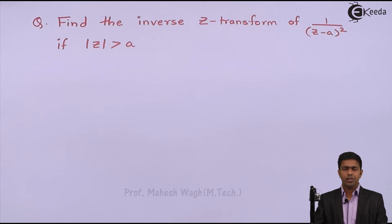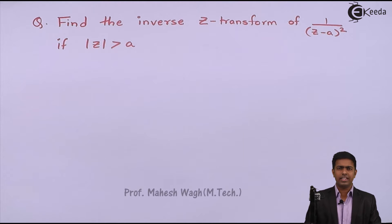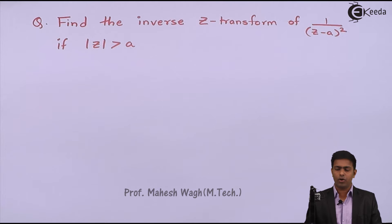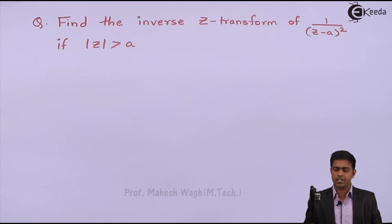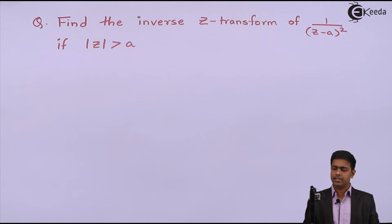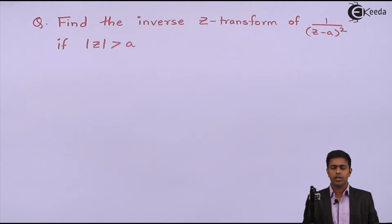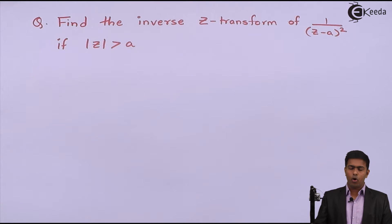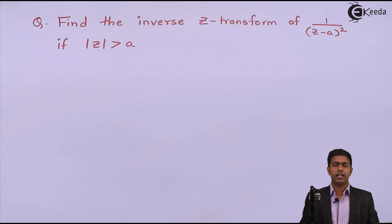Hello friends. In this video we have to find out the inverse Z transform of 1 upon (Z minus A) the whole square, if mod Z is greater than A.